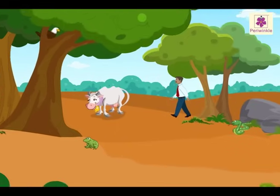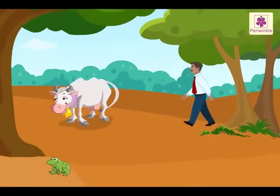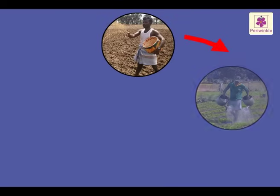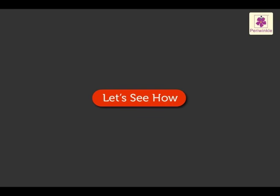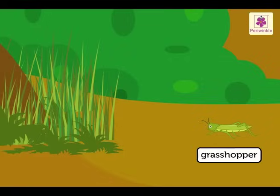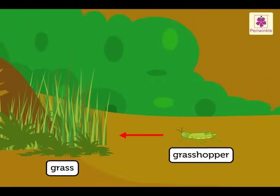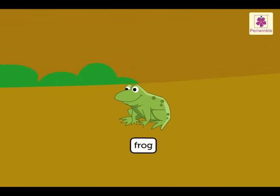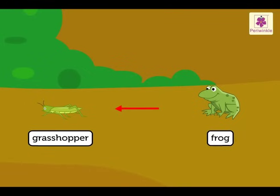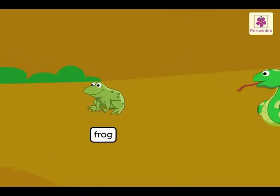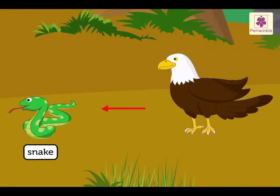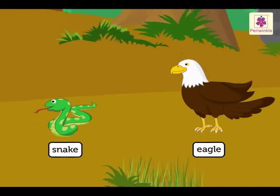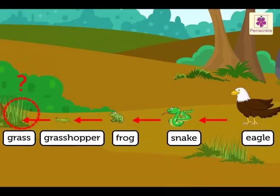In nature, we all depend upon each other — we give something and get something in return. The grasshopper depends on the grass for its food, the frog depends upon the grasshopper for its food, who in turn becomes food for the snake. The snake finally gets eaten by the eagle. But how does this help the grass?